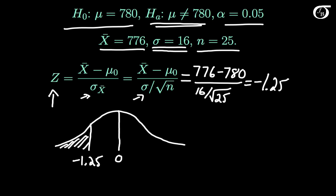If we go to software or the standard normal table, we can find that this area is 0.1056. And so our p-value is 2 times that quantity, 2 times 0.1056, which is, and I'm going to round to three decimal places here, 0.211.